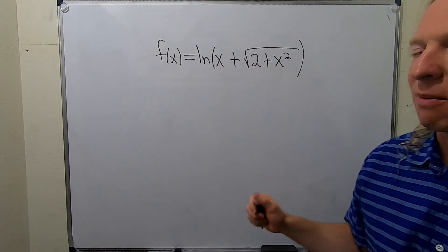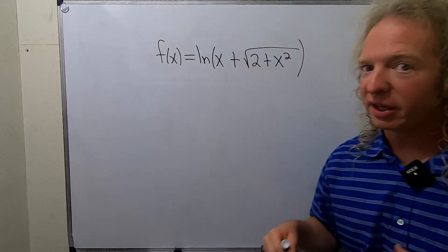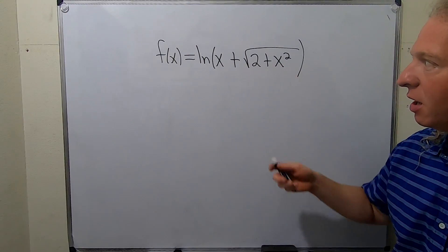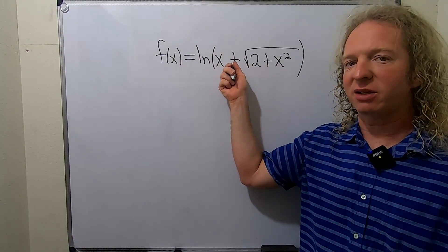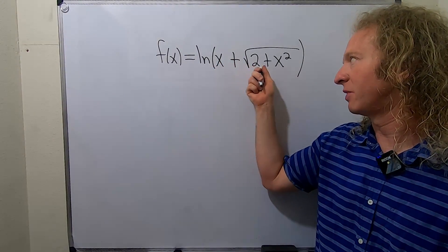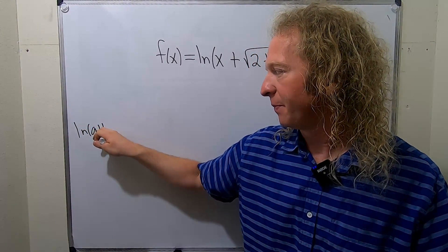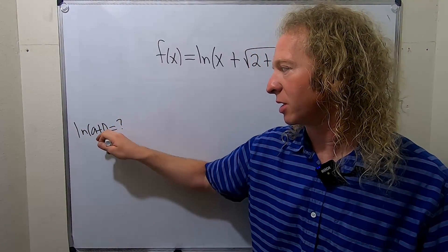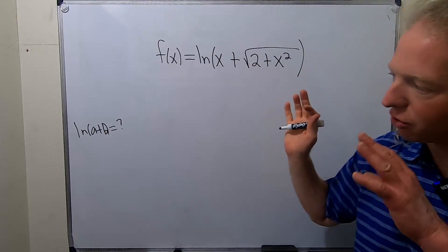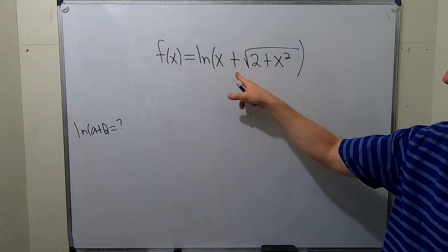Now, when you first look at this problem, you should be thinking, can it be rewritten in a nice way? Well, we can't really use any of the properties of logs because it's something plus something else. So if you have something like the natural log of a plus b, well, I don't know, actually. There's nothing really nice for this. There's no real nice formula when you have a plus.